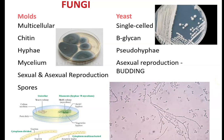Fungi consist of molds and yeast. Yeast are single cells, and they have beta-glucan in their cell wall as well as chitin. They can produce something called pseudohyphae — yeast are typically oval or round-looking cells, and they may produce these little pseudohyphae extensions, which are not truly hyphae.